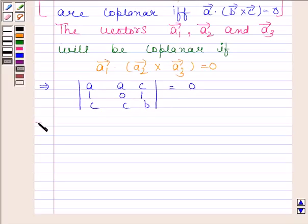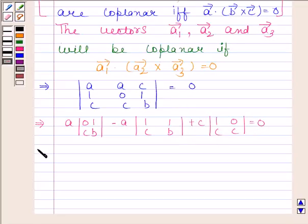This implies a into determinant of 0, 1, c, b minus a into determinant of 1, 1, c, b plus c into determinant of 1, 0, c, c is equal to zero. This implies a into 0 minus c minus a into b minus c plus c into c minus 0 is equal to zero.